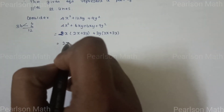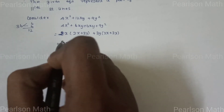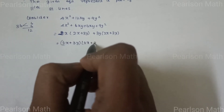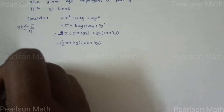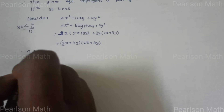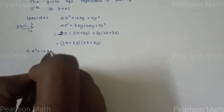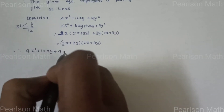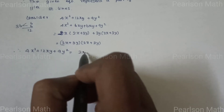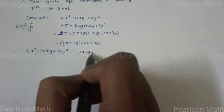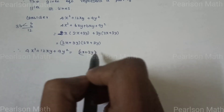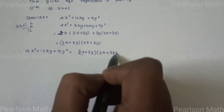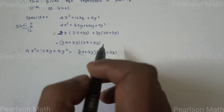We can write 4x² + 12xy + 9y² = (2x + 3y)(2x + 3y) = (2x + 3y)².